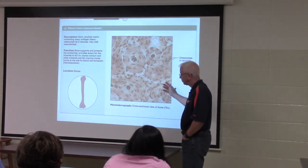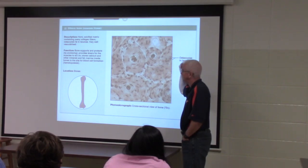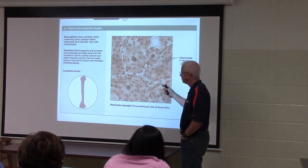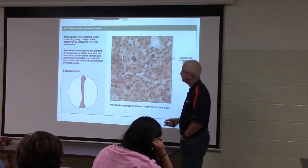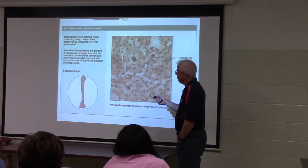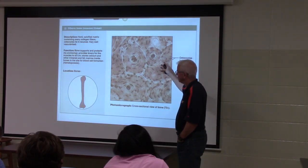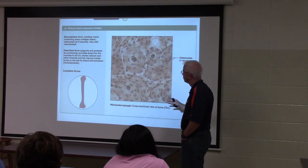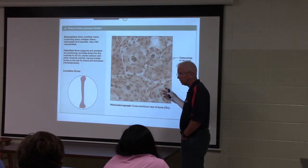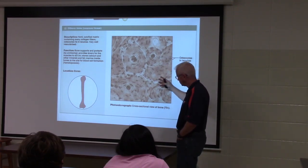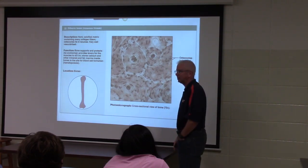Moving on to bone: it supports and protects, provides lever and muscle attachment points, is important for calcium storage, and contains marrow for blood cell formation. This histological section shows compact bone.